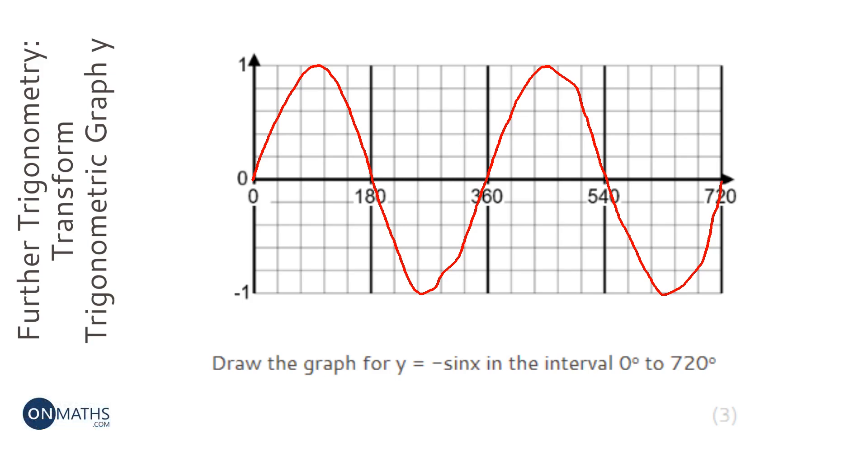So if you just pick a point like this point, which is 90. So you're going to put in sine 90 and it comes out with 1. But here we're going to negate it. So this bit here says we're going to put a minus before it. So instead of it being 1, it's going to be minus 1.